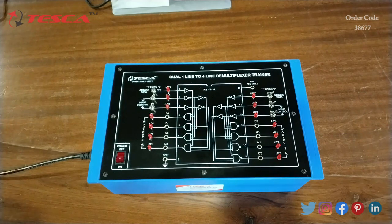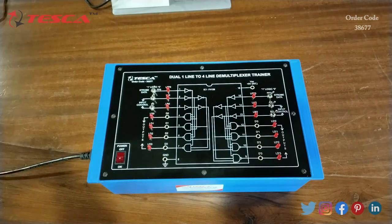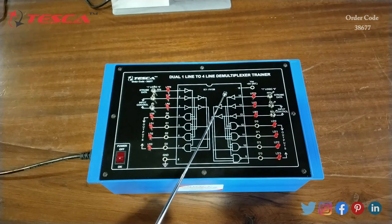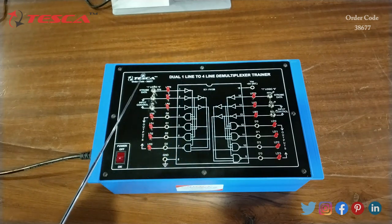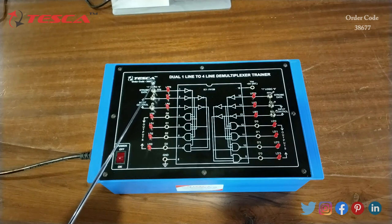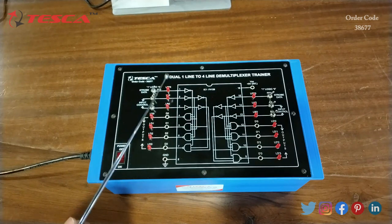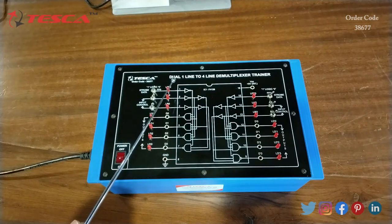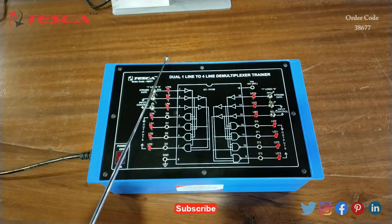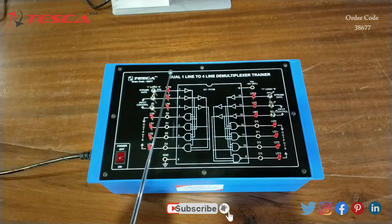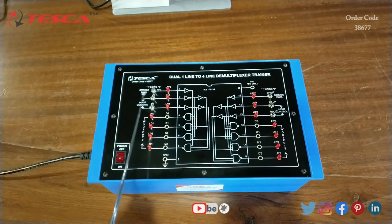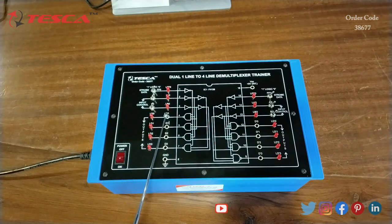This is the dual one line to four line demultiplexer trainer. Here we are using IC 74139 which performs the demultiplexing function. This is FF0 from where we give 0 and 1 logic, and the LED indicates the logic. When the LED is off it shows 0 logic, when on it shows 1 logic. These are the input controls A0 and B0.